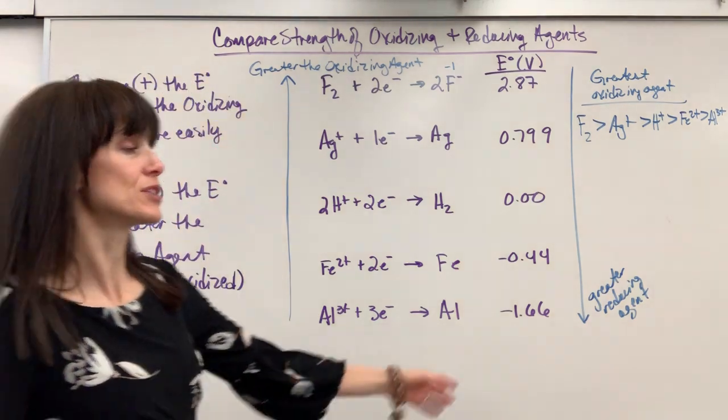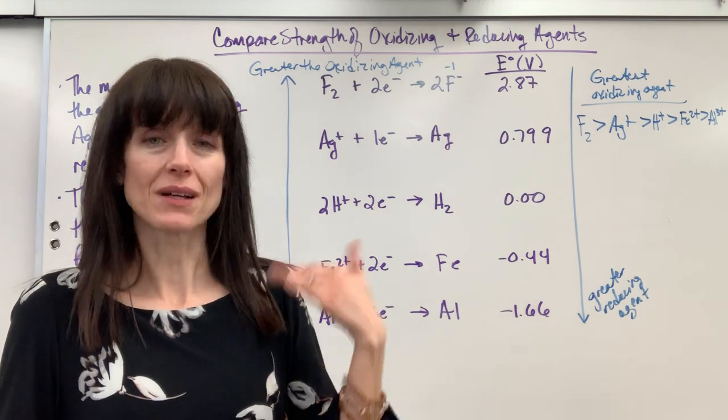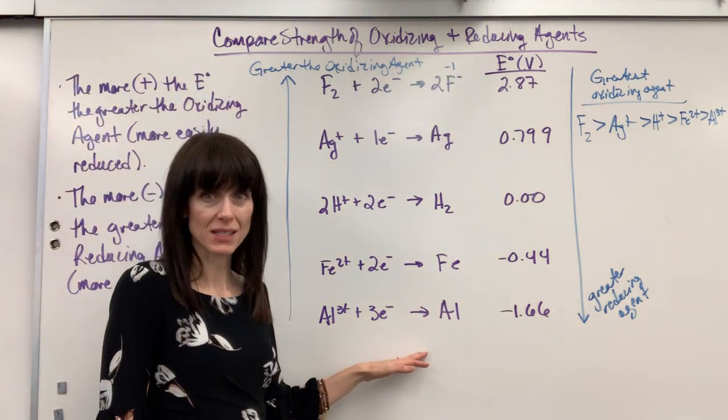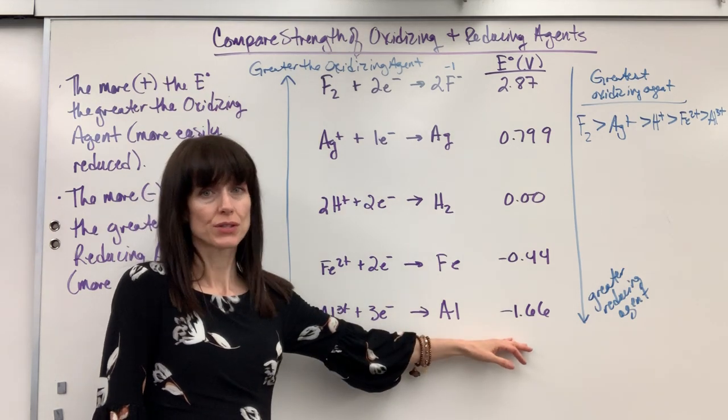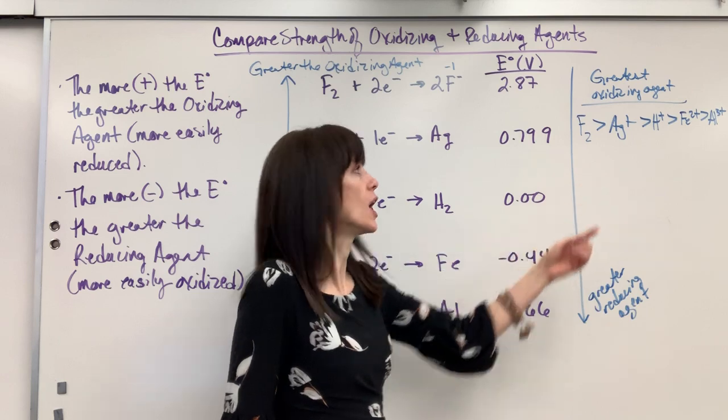Now, if I wanted to do the greatest reducing agent, I'd say reducing agent comes from what's oxidized. So, the half reactions that are most easily oxidized are the most negative. So, you already know what this answer is. It's just opposite.